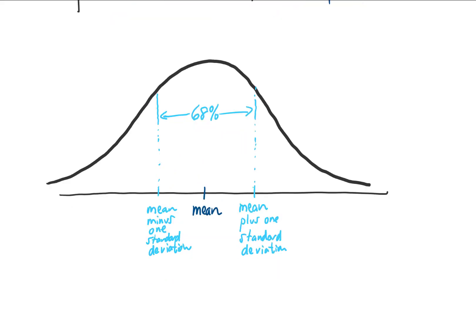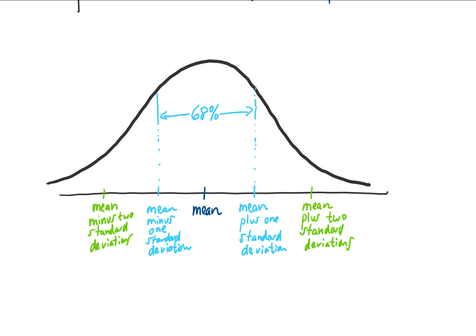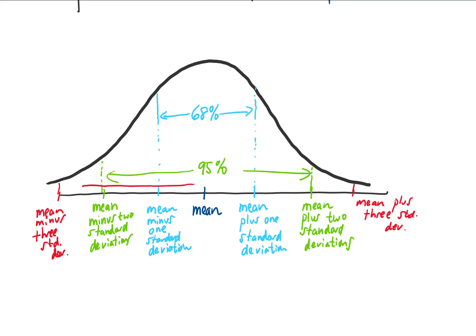Now let's take that out a little further to another standard deviation. The value out here is the mean plus two standard deviations, and over here is the mean minus two standard deviations. The amount of data that falls between those two values is 95%. Going out one standard deviation further, we find that 99.7% of our data for a normal distribution falls within three standard deviations of the mean.